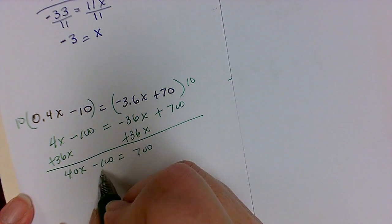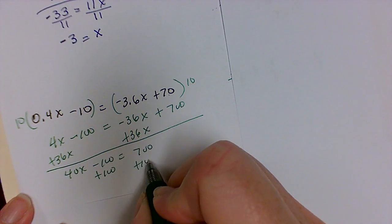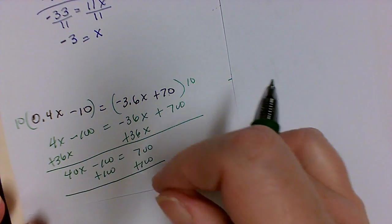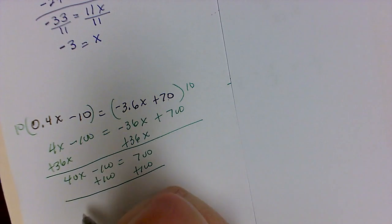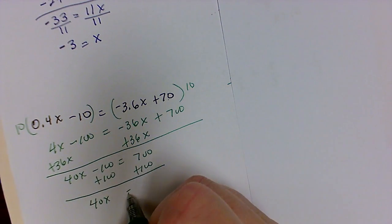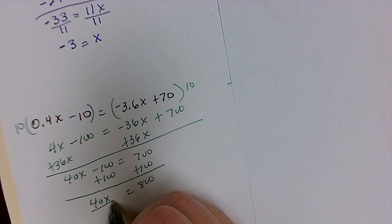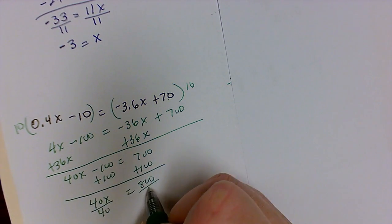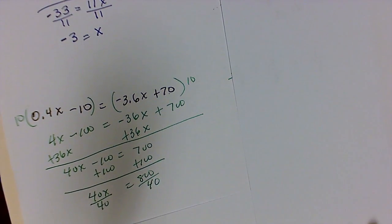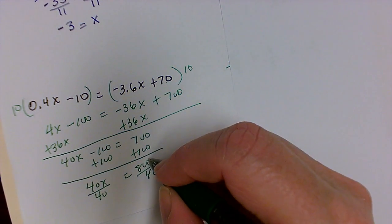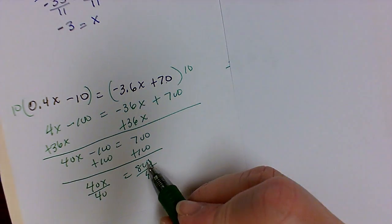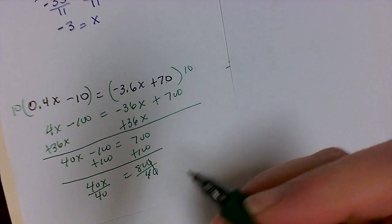So this will get me 40x minus 100 is equal to 700. So now I'm going to move my 100 over by doing the opposite of what's being done. And this will leave me with 40x is equal to 800. If I divide by 40 on both sides to clear my x, I can easily cancel out the zeros on the end.